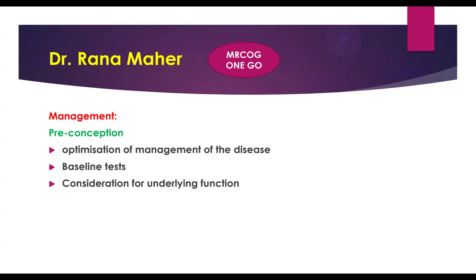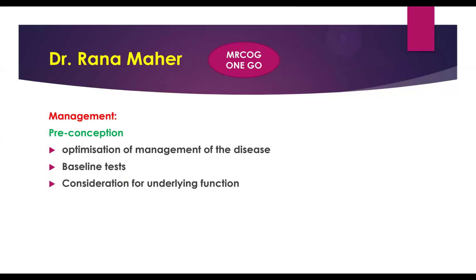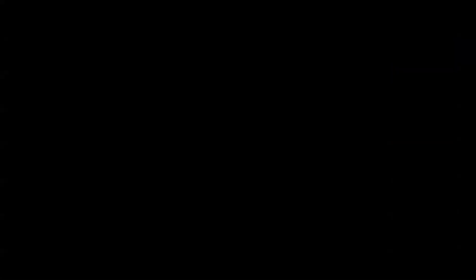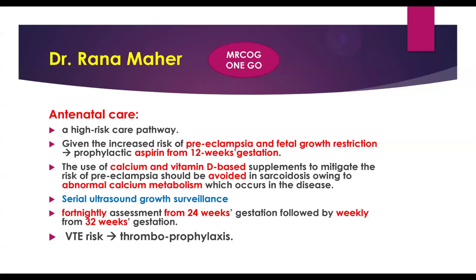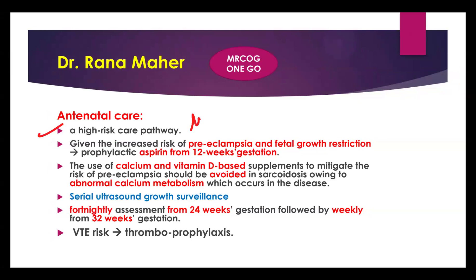To recap management across stages: preconception — optimize management by reviewing medications, assessing disease activity, and performing baseline investigations including pulmonary function tests. Antenatal care — high-risk care pathway with a multidisciplinary team. There is increased risk of pre-eclampsia and fetal growth restriction, so offer aspirin from 12 weeks.